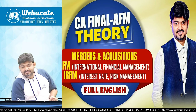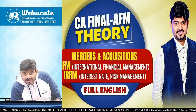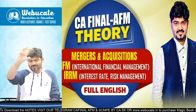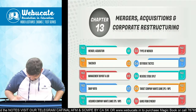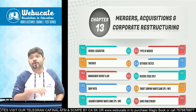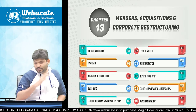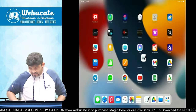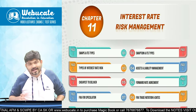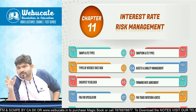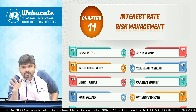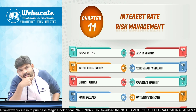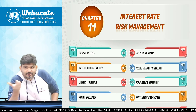Here comes AFM theory for three chapters: mergers and acquisitions, international financial management, and interest rate risk management — one hour, approximately 20 minutes per topic. If you have your magic book, that's where I will be taking it from; if not, your module is also absolutely okay. These three chapters can be asked in the exam for approximately five to six marks in MCQ, so we have to cover them from both MCQ and theory perspectives.